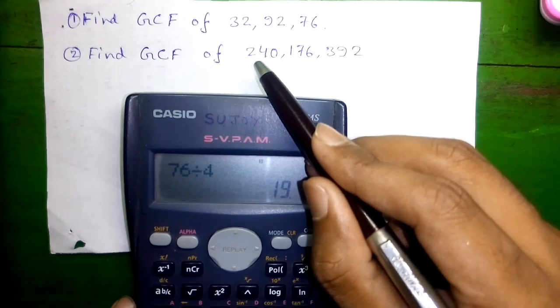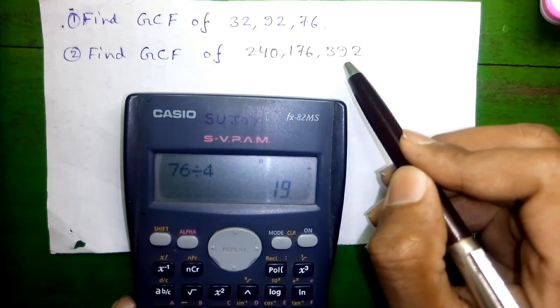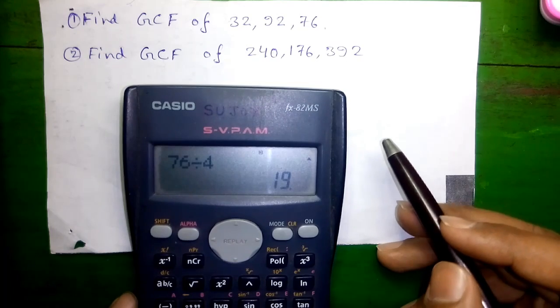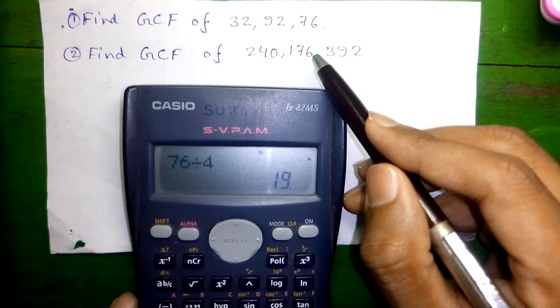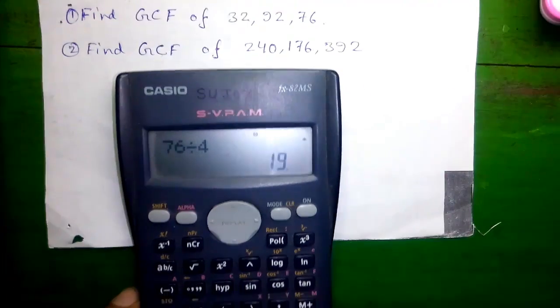Next we will find GCF of 240, 176 and 392. Same process, we will divide largest number by smallest number. So we will divide 392 by 176.